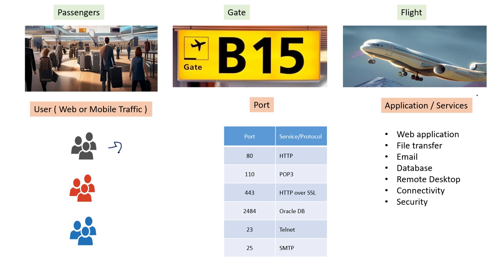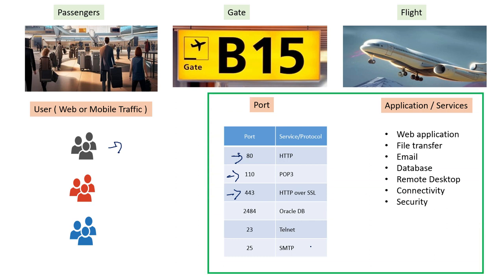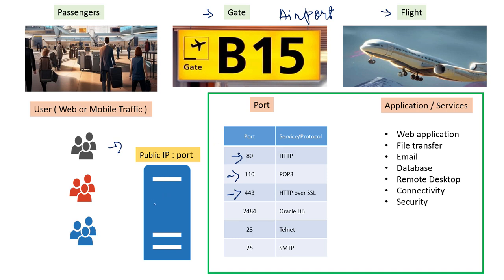We have different ports for different applications. For example, port 80 is for HTTP, port 110 is for POP3, port 443 is for HTTPS, and there are many other ports offering different services. The gate and the flight — you find them at the airport. So your airport is like your server. Your airport is your server, and you have a public IP. This is our server which will serve requests.